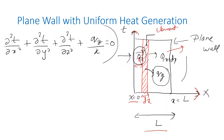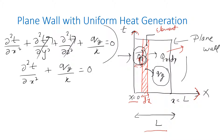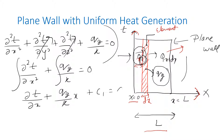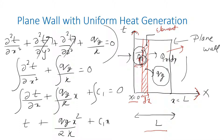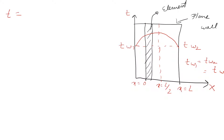Since we are considering heat only in the x-direction, y and z coordinates cancel. Our equation becomes: ∂²T/∂x² + q_g/k = 0. Integrating once gives: ∂T/∂x + q_g·x/k + C1 = 0. Integrating again gives: T + q_g·x²/(2k) + C1·x + C2 = 0, so we can write T = -q_g·x²/(2k) - C1·x - C2. This is our expression for temperature distribution.